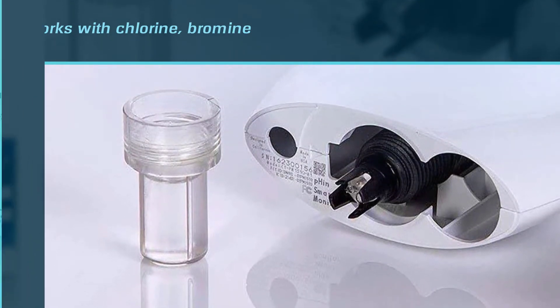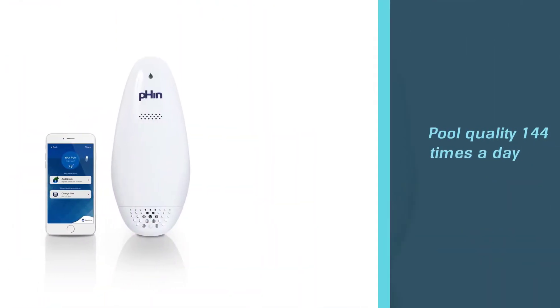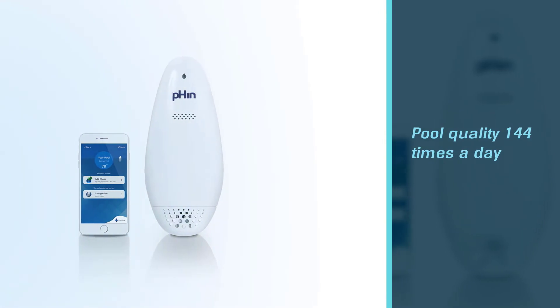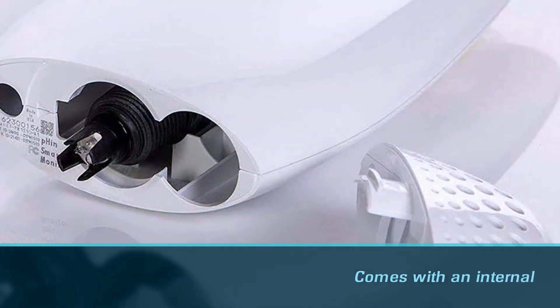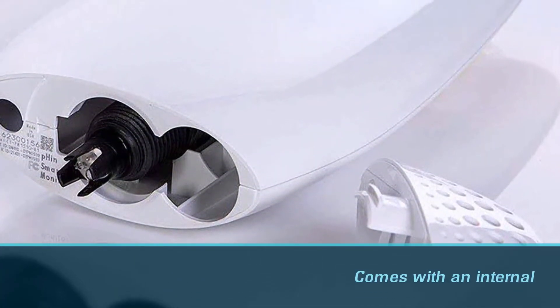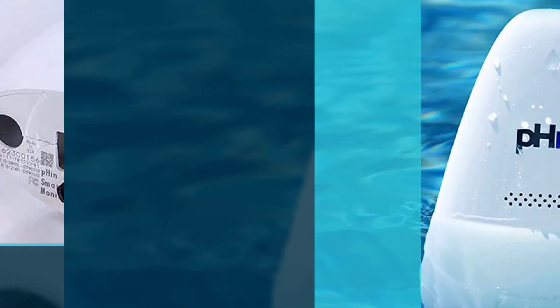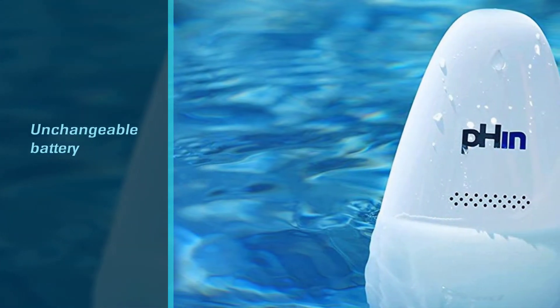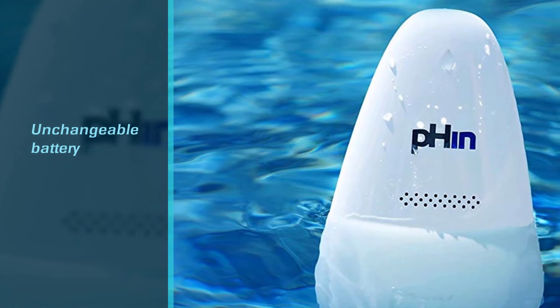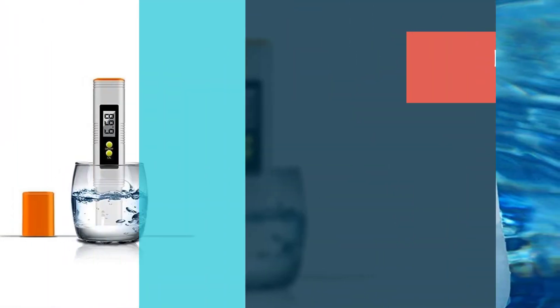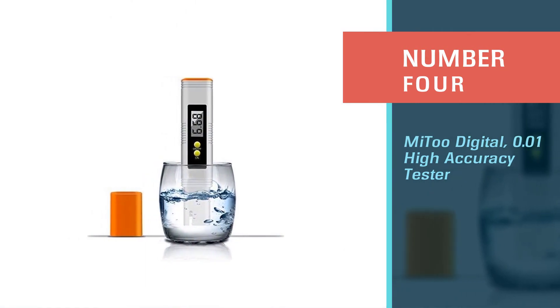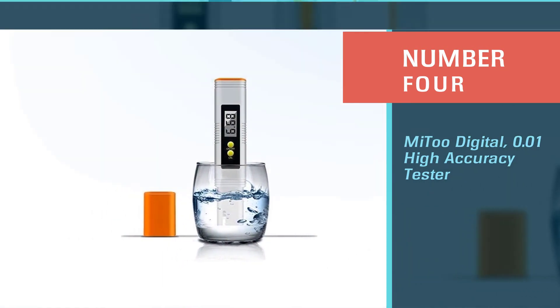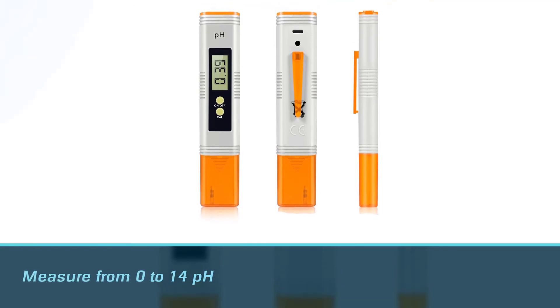The pHin works with chlorine, bromine, and salt pools, so you don't have to do anything special to make it work no matter what kind of pool you have. It also measures your pool quality 144 times a day, so you get very accurate information about your pool status.